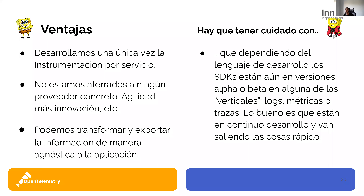¿Con qué hay que tener cuidado actualmente con OpenTelemetry? Dependiendo del lenguaje de desarrollo, hay SDKs que aún están en versiones alfa o beta en algunas de las verticales: logs, métricas o trazas. El OTel Collector sí que ya está released, por ahí no hay problema. Pero en los distintos lenguajes hay que ver en qué estado está cada uno. Se pueden hacer pruebas con alfa y beta y funciona, pero para ir a producción no sería lo más recomendable.